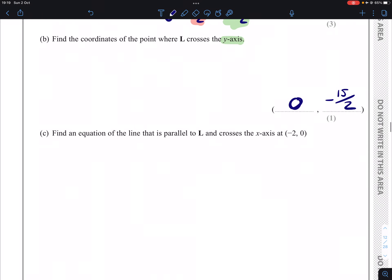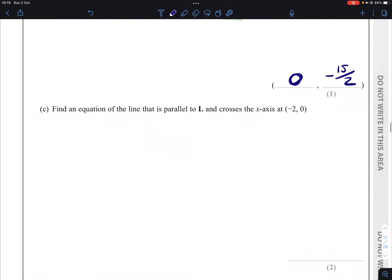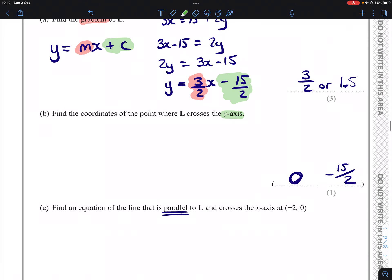Part C: find an equation of the line that is parallel to our L and crosses the x-axis at (-2, 0). So parallel to L basically means that we're going to have the same gradient as L.